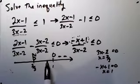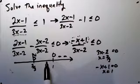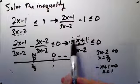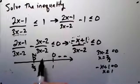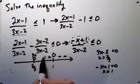Likewise, if I put in a number just to the left of 1, like 0.9, this is positive. And 3 times 0.9 minus 2 is positive. So we're positive in here.